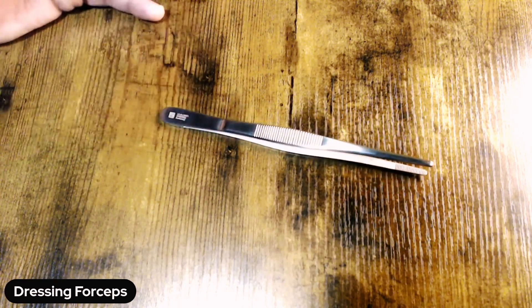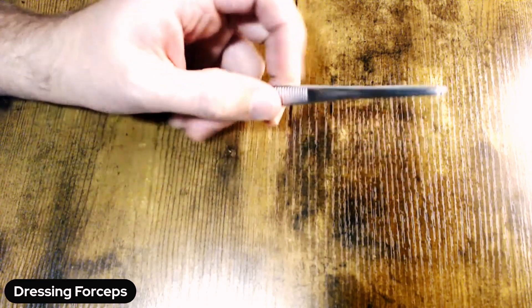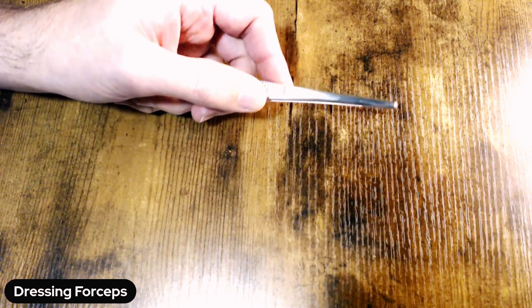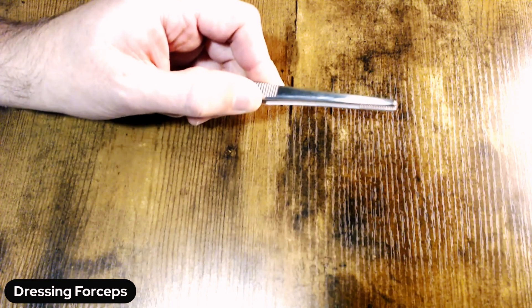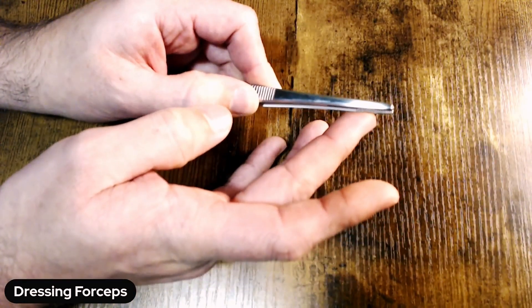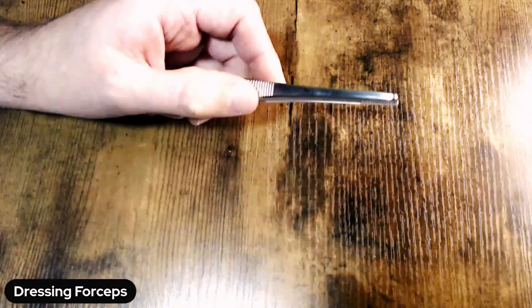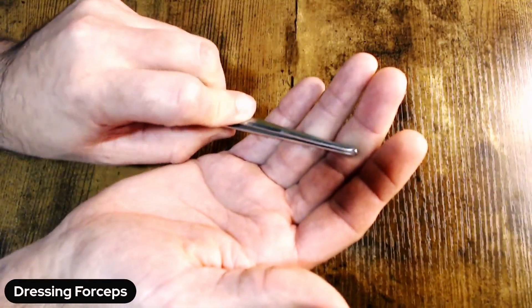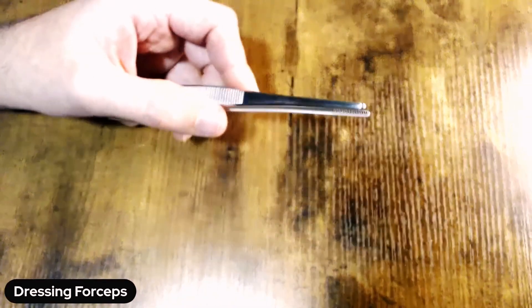Finally, on the functionality portion of these, with all your forceps, you're going to want to make sure that the jaws align as they close. Okay, so any overlap you see there—you can kind of see the serrations on the bottom here—that's what you do not want to see if you are inspecting a forcep. You want it to be completely solid and mated. No overlap on either side of the forceps itself.